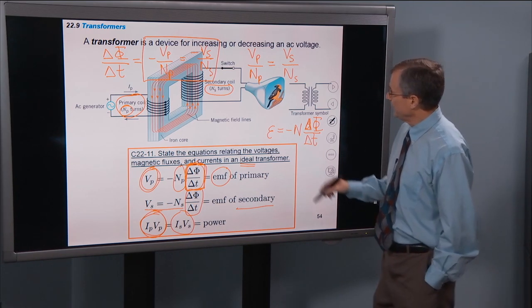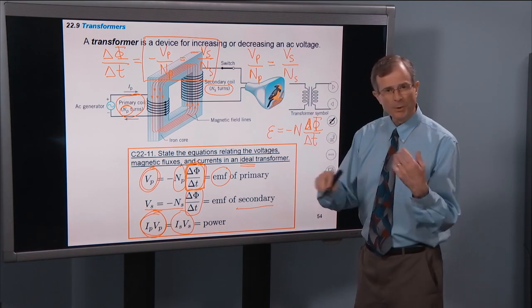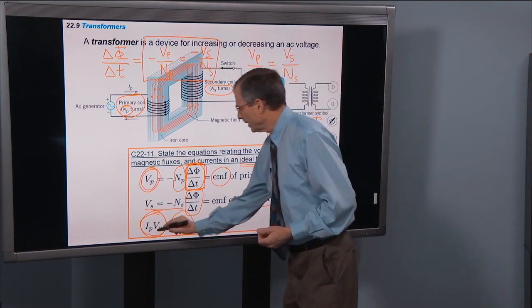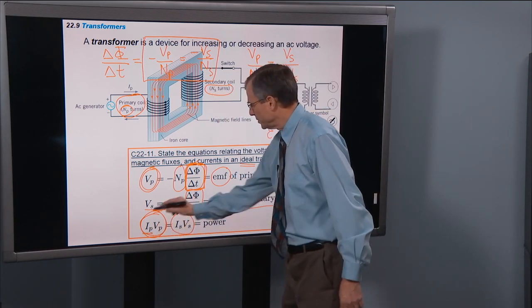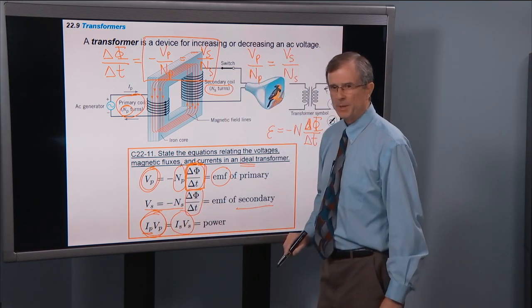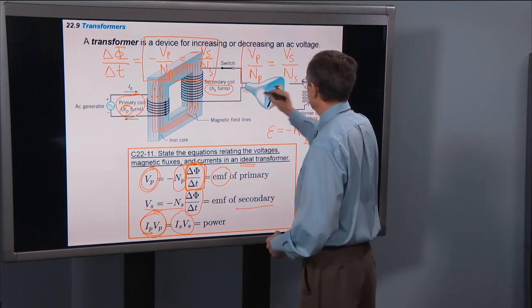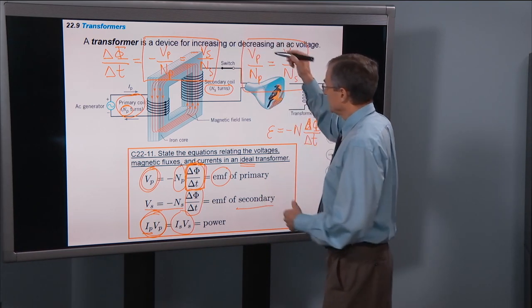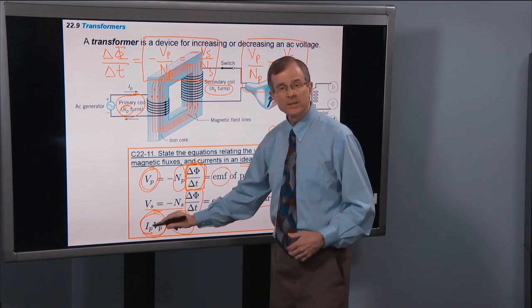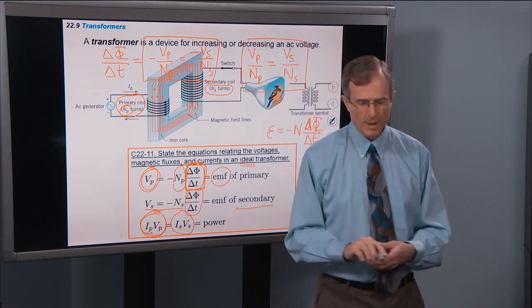And then you can always, if you need to relate it to the current, some of the problems will deal with that. If you want to relate it to the current, then you can use this equation. So you basically have these two equations that relate the voltage, the number of turns, and the current in both the primary and the secondary.